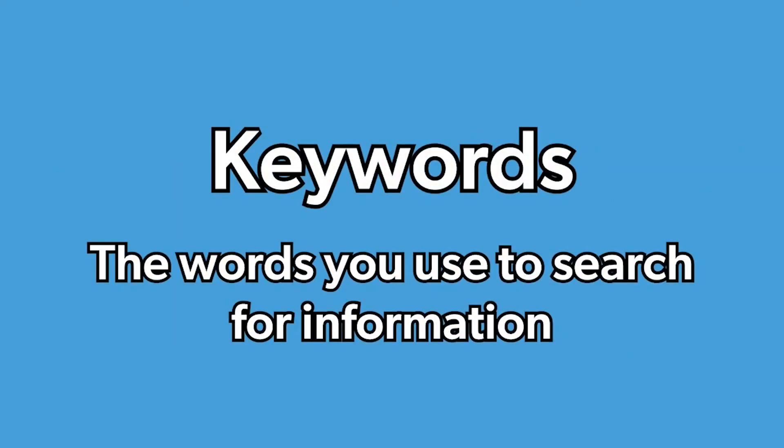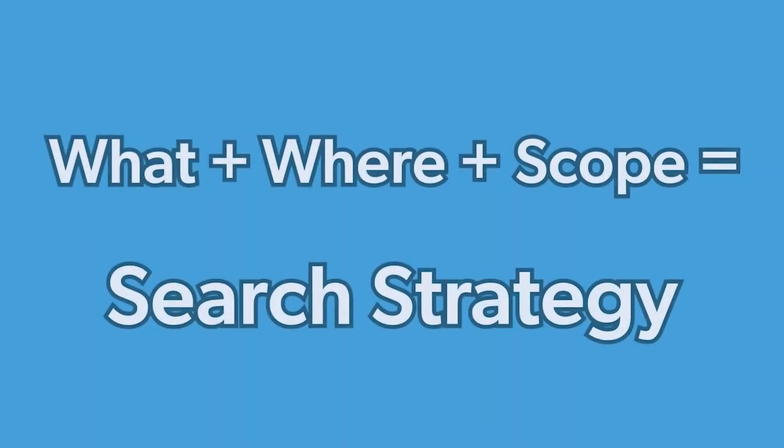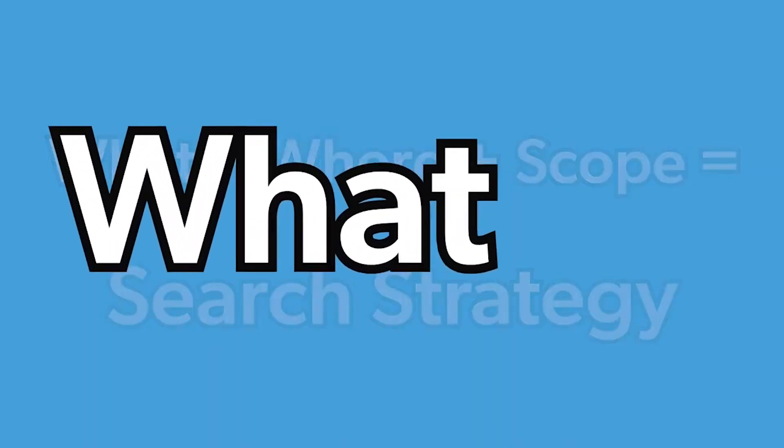Keywords are the search terms you choose to use in the search bar — this is the what of your research. You want to use a combination of keywords together to start your research process, and you want to use your open research question for clues on where you should begin.